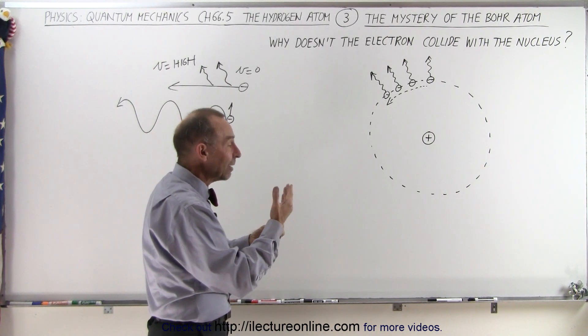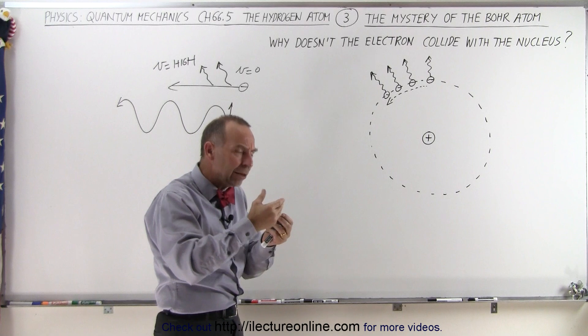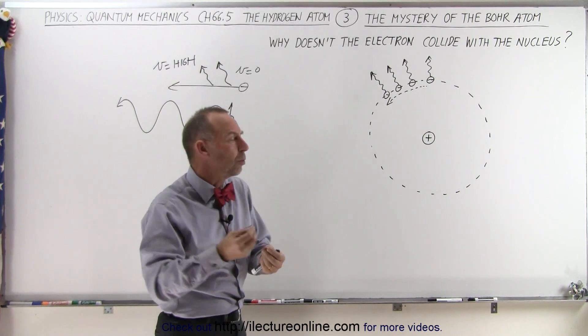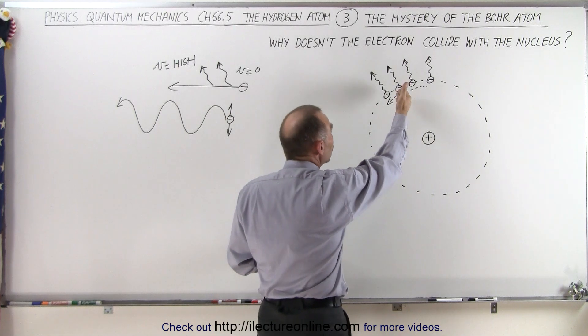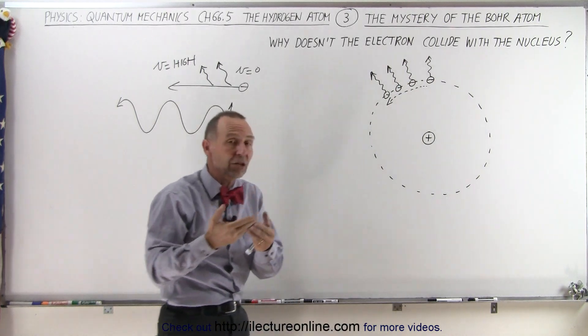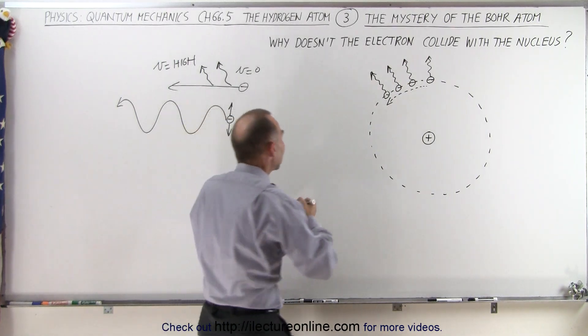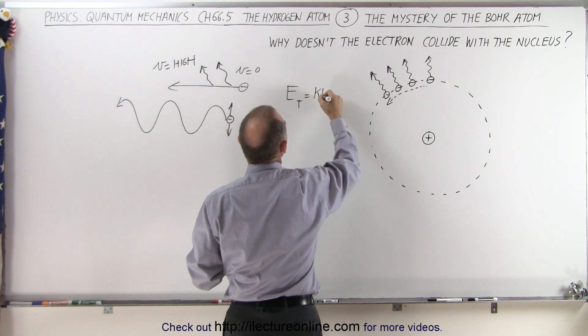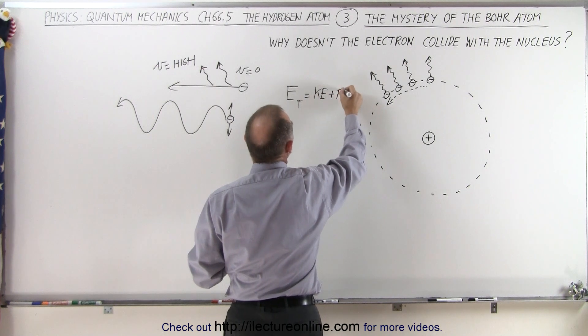The problem with that is that if an object radiates energy, it loses energy. And if it loses energy, it must be going slower, because ultimately the energy of an electron is simply the combination of potential and kinetic energy.